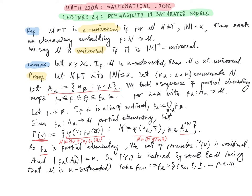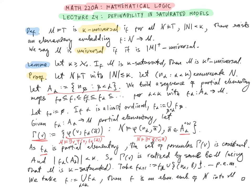We take F_{α+1} to be F_α together with the pair (N_α, b). This is the desired partial elementary map whose domain contains A_α. We take F to be the union of this chain of partial elementary maps F_α for α less than κ. Then by construction, F is an elementary embedding of N into M. This concludes the proof of the lemma.